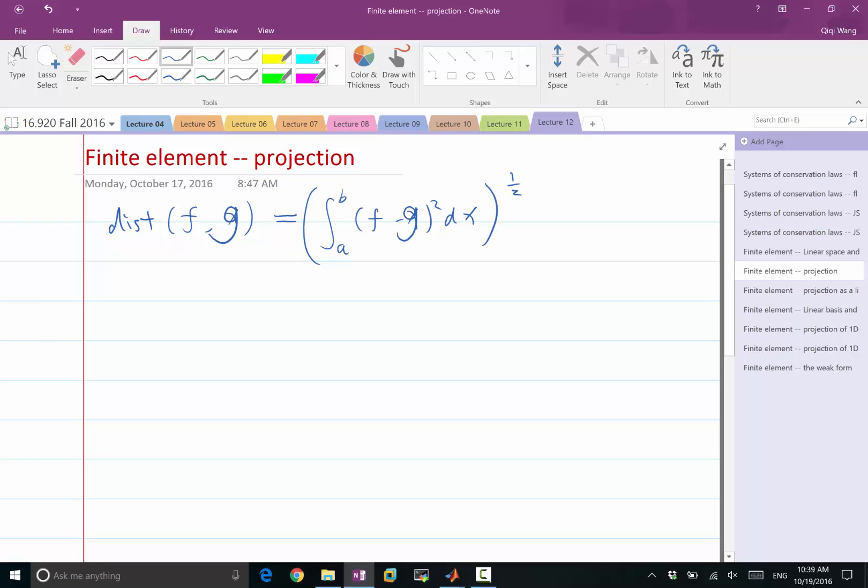Maybe I shouldn't use x here. So f and g, let's say, dx, square root. That's the least squares distance between the functions f and g. If I want to minimize over all the possible g's that is in the space big X, that kind of minimization is called a projection.